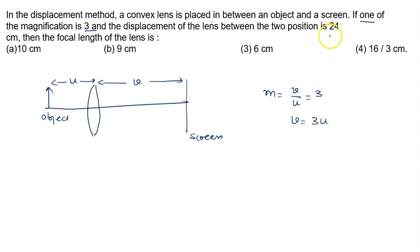The displacement of the lens between the two positions is 24 cm. The lens is shifted through a distance of 24 cm. We need to find the focal length of the lens.